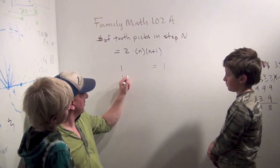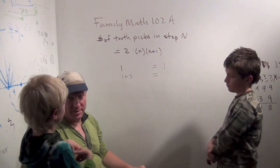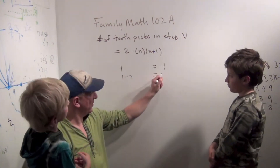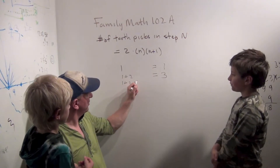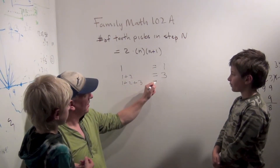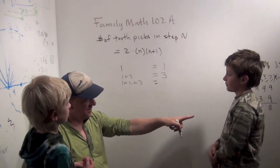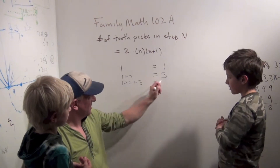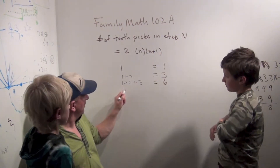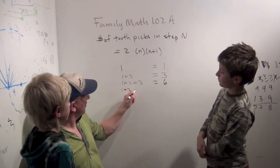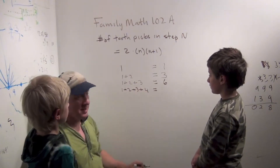What does 1 plus 2 equal? 1 plus 2 equals 3. And 1 plus 2 plus 3? That's going to be 6. And 1 plus 2 plus 3 plus 4 is 10.